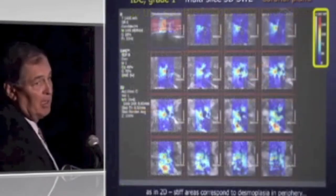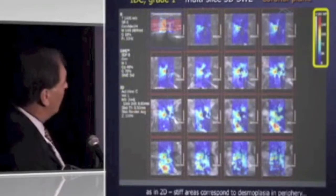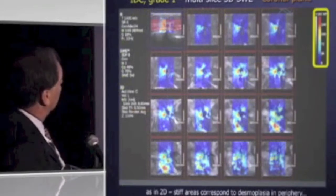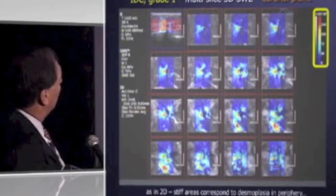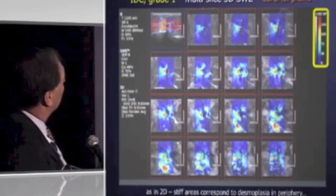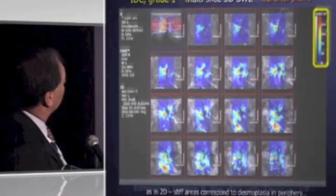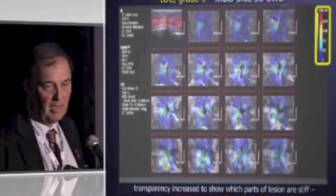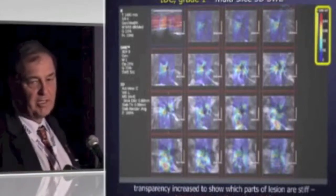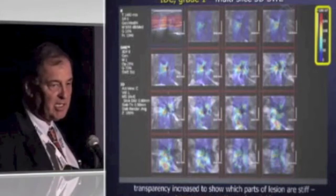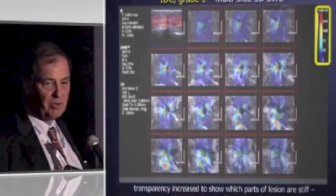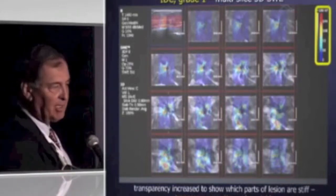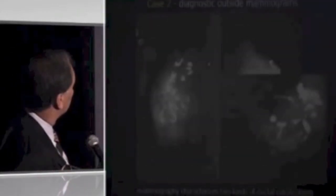Here's the color elastography map in multi-slice coronal sections. It's really hard to tell what are the stiff elements, but you can turn the transparency up, and as you do that, you start to see through the color map to the underlying grayscale structure. Then you can clearly see that it's the fibroelastosis and the spicules that are giving rise to the stiffness in these stellate lesions.